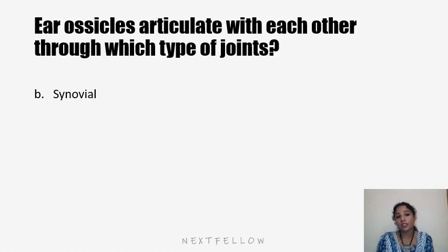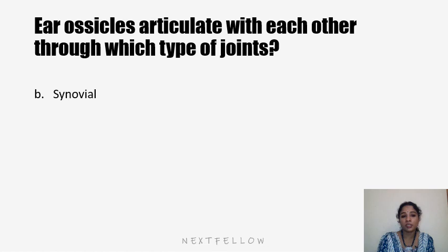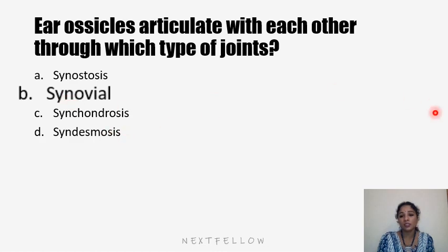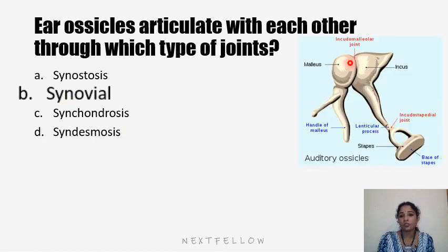The next question: ear ossicles articulate with each other through which type of joint? Options: synovial, synostosis, synchondrosis, or syndesmosis. The answer is synovial joint. The joint between the ear ossicles — malleus, incus, and stapes — is a synovial joint.